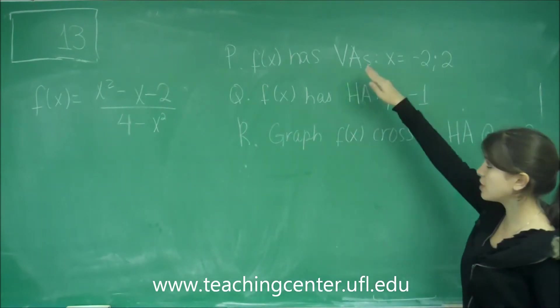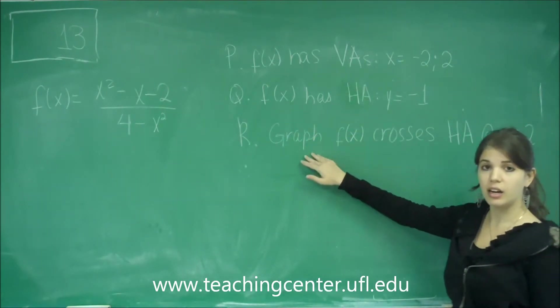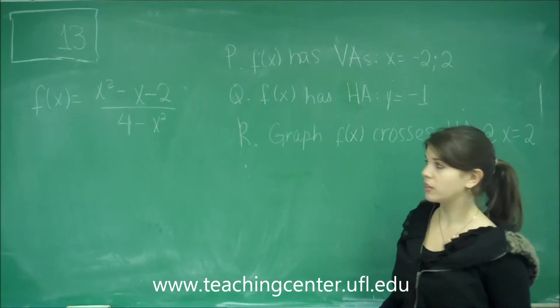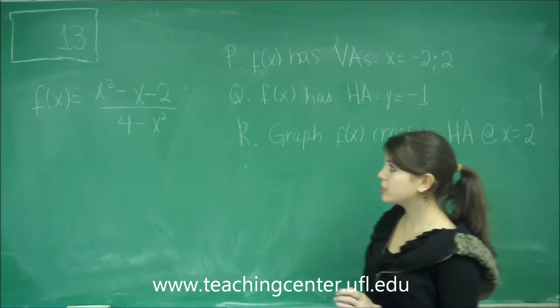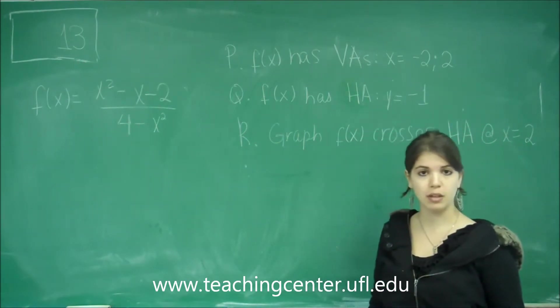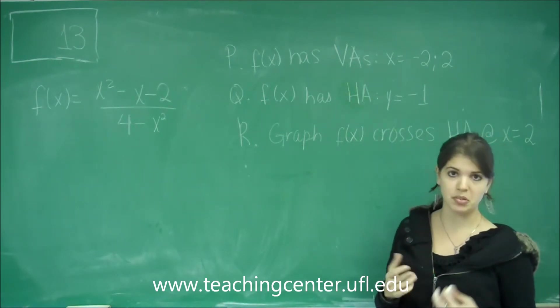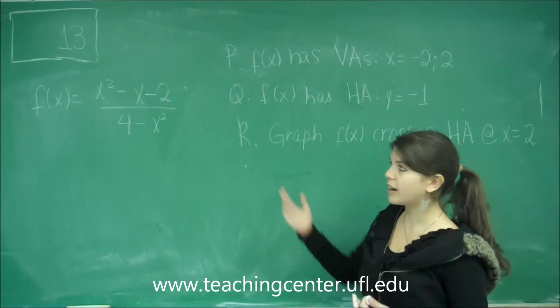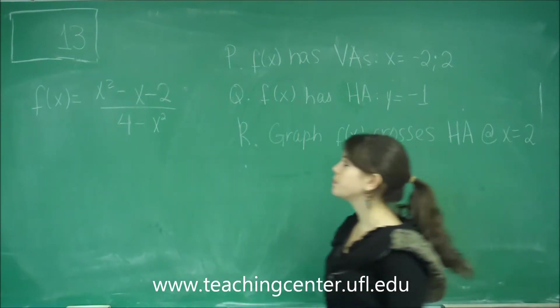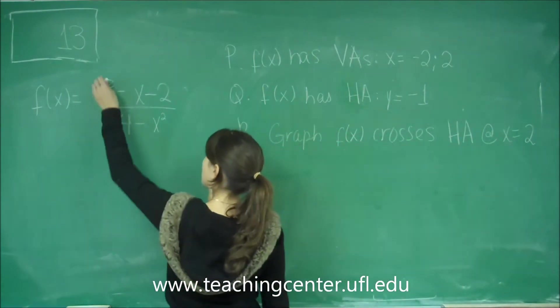All these questions have to do with graphing polynomials. The first thing you want to do when you're graphing something to try to find vertical asymptotes, horizontal asymptotes, and that kind of thing is to factor out as much as you can. So let's go ahead and factor out the top first.